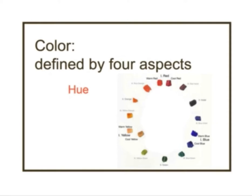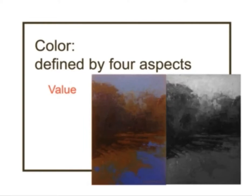Hue is simply the color's position on the color wheel. Here you can see a color wheel mixed using the split double primary palette — going from the primaries, red, yellow, and blue, to the secondaries, orange, violet, and green, to the tertiaries, which are mixtures of primaries and secondaries. Just think of hue as the chroma — the position of the color on the color wheel or the spectrum.